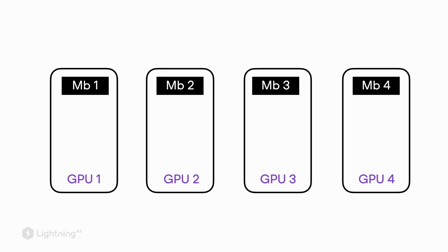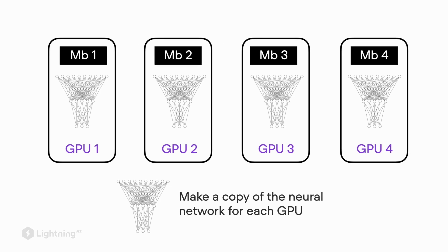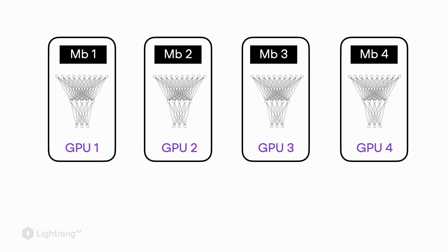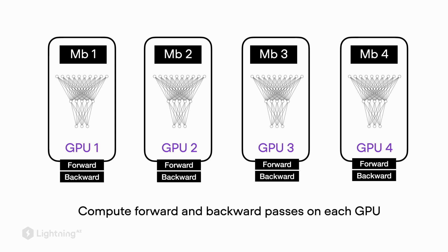We take the model that we want to train, make multiple copies of it, and place one copy along with the micro-batch onto a different GPU. Since each GPU has a copy of the model with a different micro-batch, we can run all the training forward and backward passes in parallel.